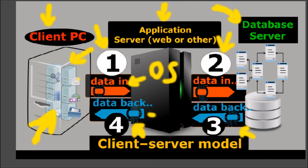With a dumb terminal, you log in and it will have many different instances of client-server applications. You basically go to the dumb terminal and it has direct access to the application server — in this case, the operating system. Once you log in, you're actually logged in to this application server using the dumb terminal, which is the client PC in our case. The same process applies: it goes to step 2 and connects to the database server. That's how the client-server model works, and I hope I explained it in a way that's easy to understand.